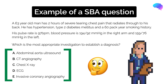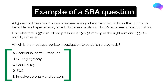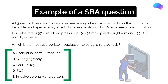In this example, we are concerned that this man may have had an aortic dissection, and we have come to this conclusion based on his history, his risk factors, and his examination findings. We are being asked which is the most appropriate investigation to establish a diagnosis. The correct answer to this question is option B, CT angiography, because this will help us establish a diagnosis of aortic dissection.